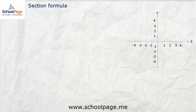Let us understand the section formula. For this, let us take a line segment AB. Let the coordinates of point A be (x1, y1) and the coordinates of point B be (x2, y2). Let the point P divide the line segment AB internally in the ratio M1 is to M2.